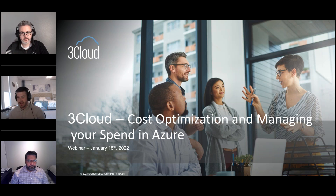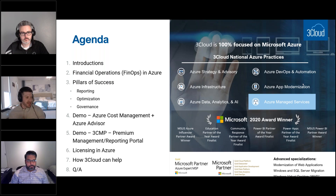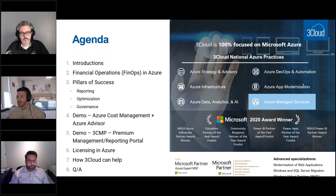So without further ado, let me cover what we plan to discuss today. When it comes to cost optimization and managing spend, what we like to call it is financial operations, or FinOps. We'll cover the three pillars of FinOps: reporting, optimization, and governance. We'll do demos of Azure Cost Management, Azure Advisor, and our internal tool called 3CMP. We'll also talk about licensing in Azure, how you buy your licenses, and how 3Cloud can help. We'll wrap up with a Q&A.